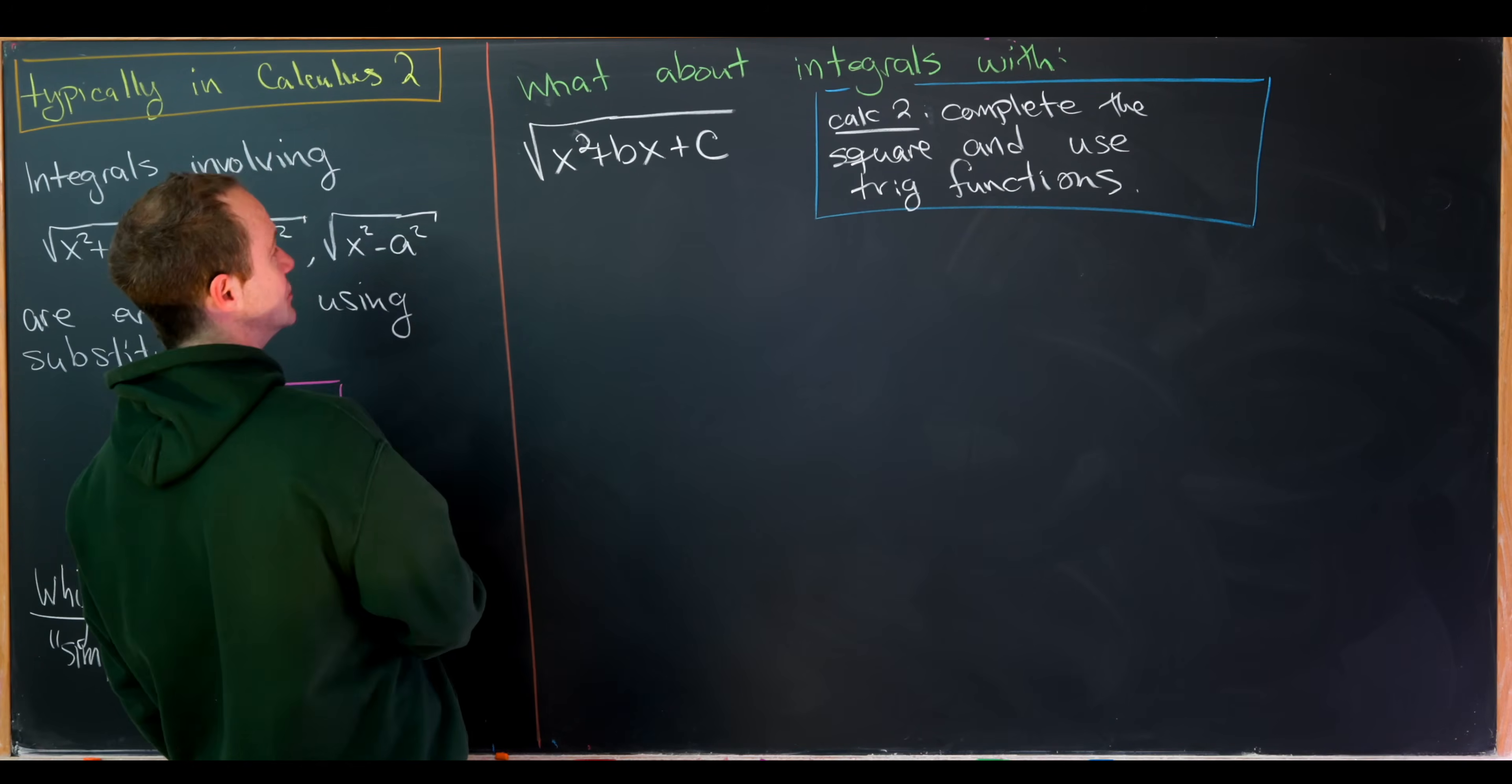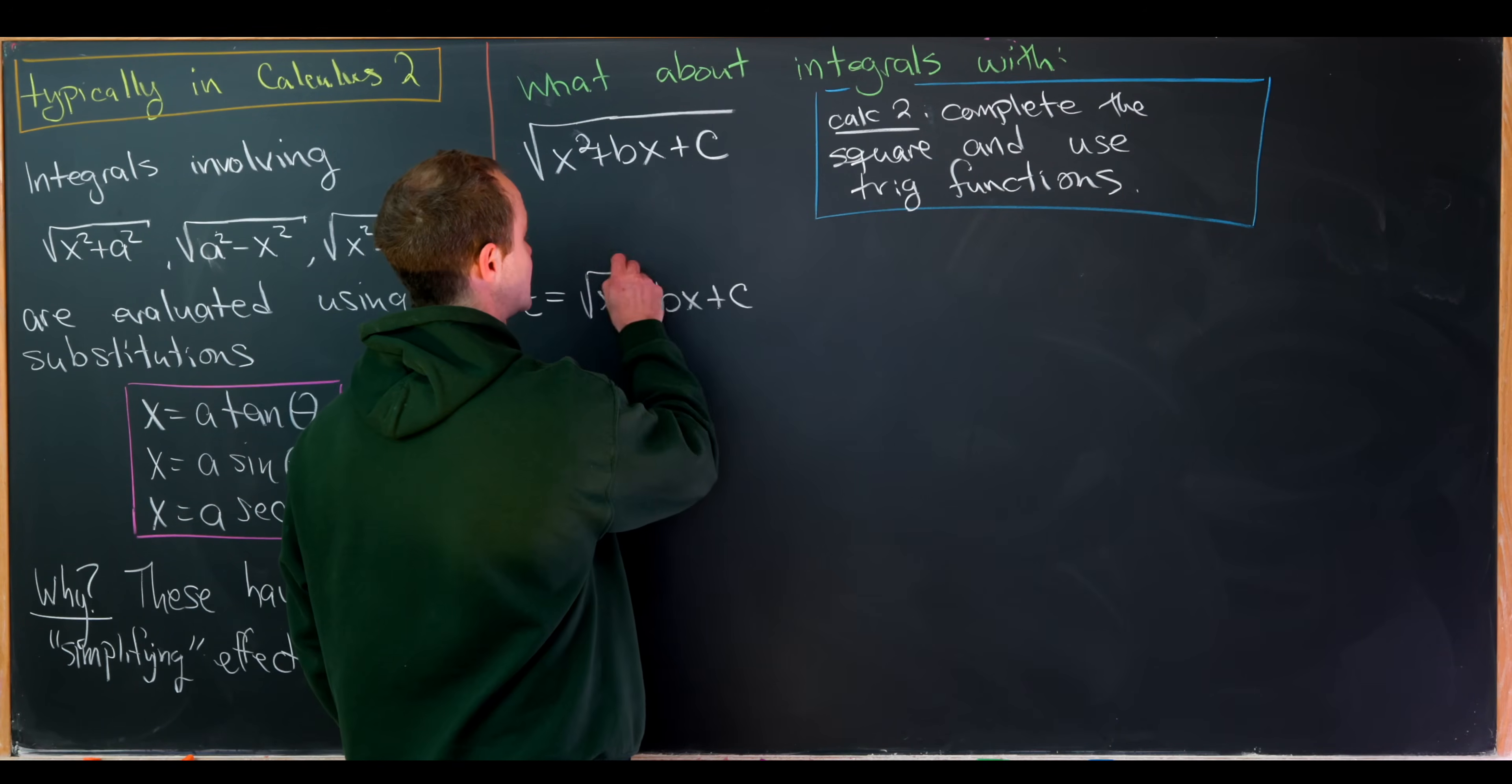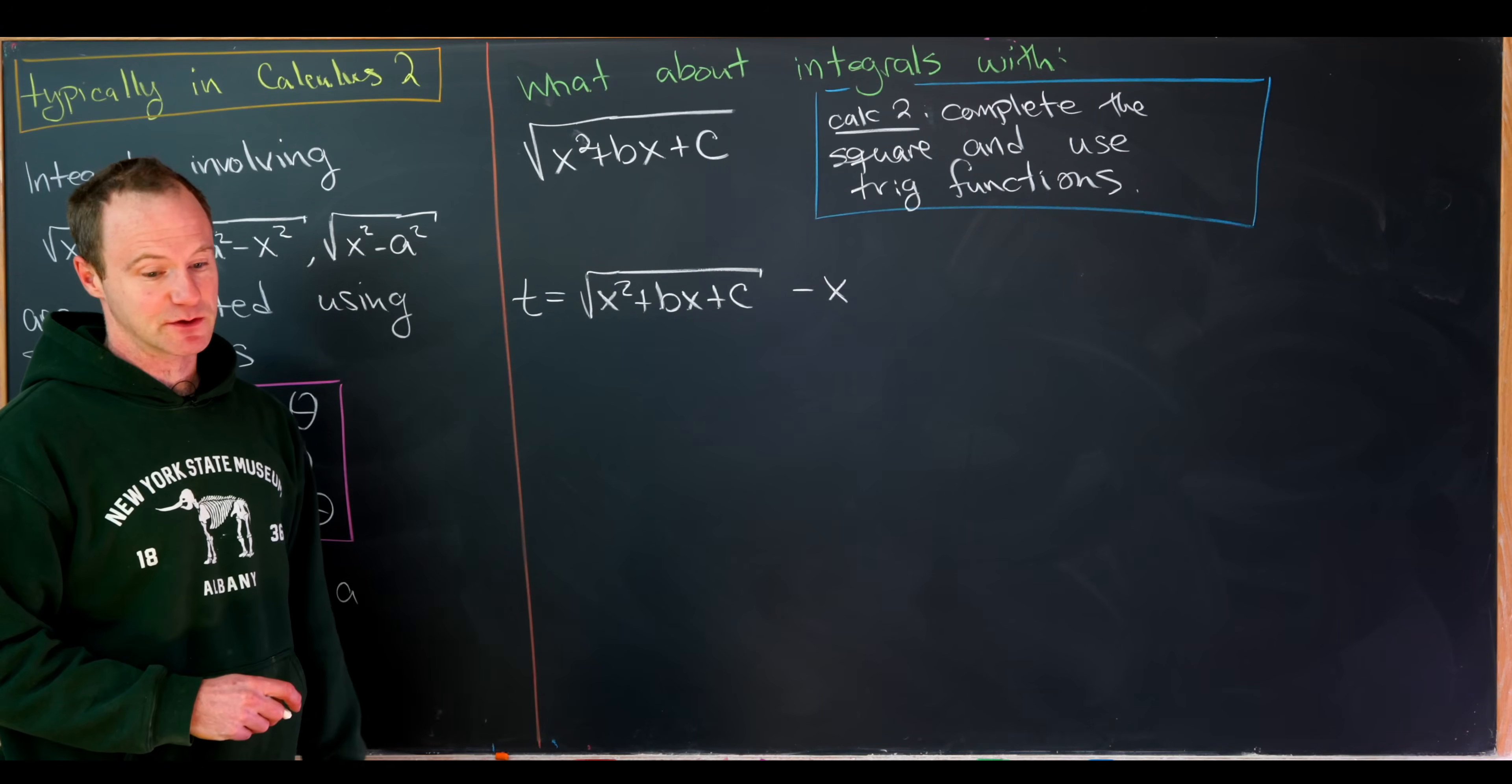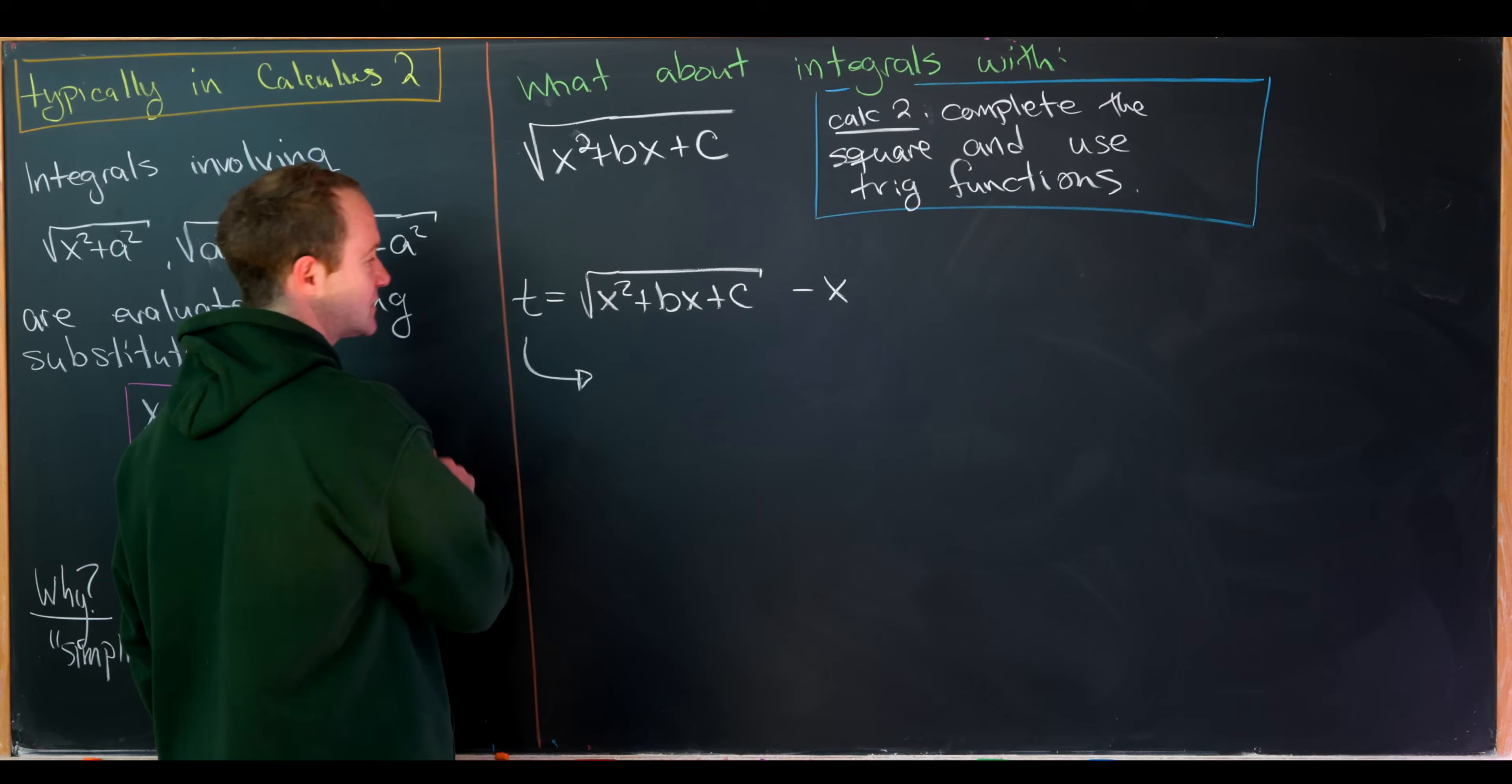And so what we'll do is set t equal to the square root of x squared plus bx plus c minus x. So that'll be our substitution. But you might say, well, if t is equal to all of this, then what do I set x equal to? Well, it turns out even though this seems pretty gnarly, we can solve it for x fairly easily. So let's do that.